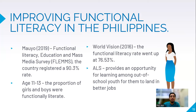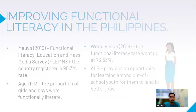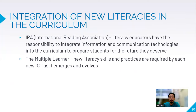Improving functional literacy in the Philippines: according to a Functional Literacy Education and Mass Media Survey, the country registered a 90.3% rate of functional literacy. Ages 11 to 13 showed proportions of girls and boys who are functionally literate. According to World Vision, the functional literacy rate went up to 76.53% — that is a good number showing our progress.